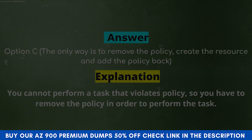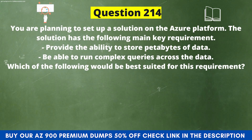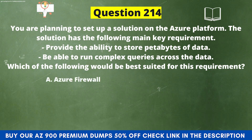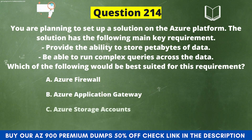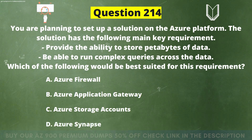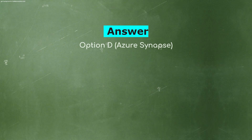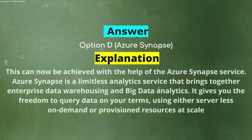Next question: You are planning to set up a solution on Azure with these key requirements: provide the ability to store petabytes of data and run complex queries across the data. Which of the following would be best suited? Option A: Azure Firewall. Option B: Azure Application Gateway. Option C: Azure Storage Accounts. Option D: Azure Synapse. The correct answer is Option D, Azure Synapse. Azure Synapse is a limitless analytics service that brings together enterprise data warehousing and big data analytics, giving you the freedom to query data on your terms using either serverless on-demand or provisioned resources at scale.